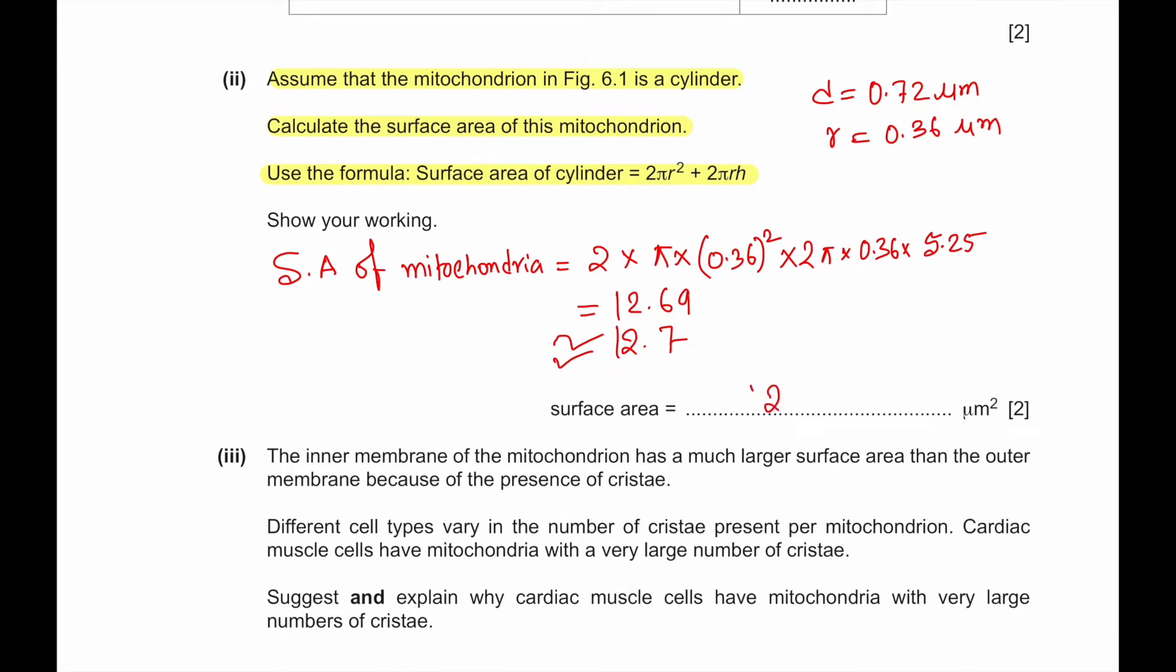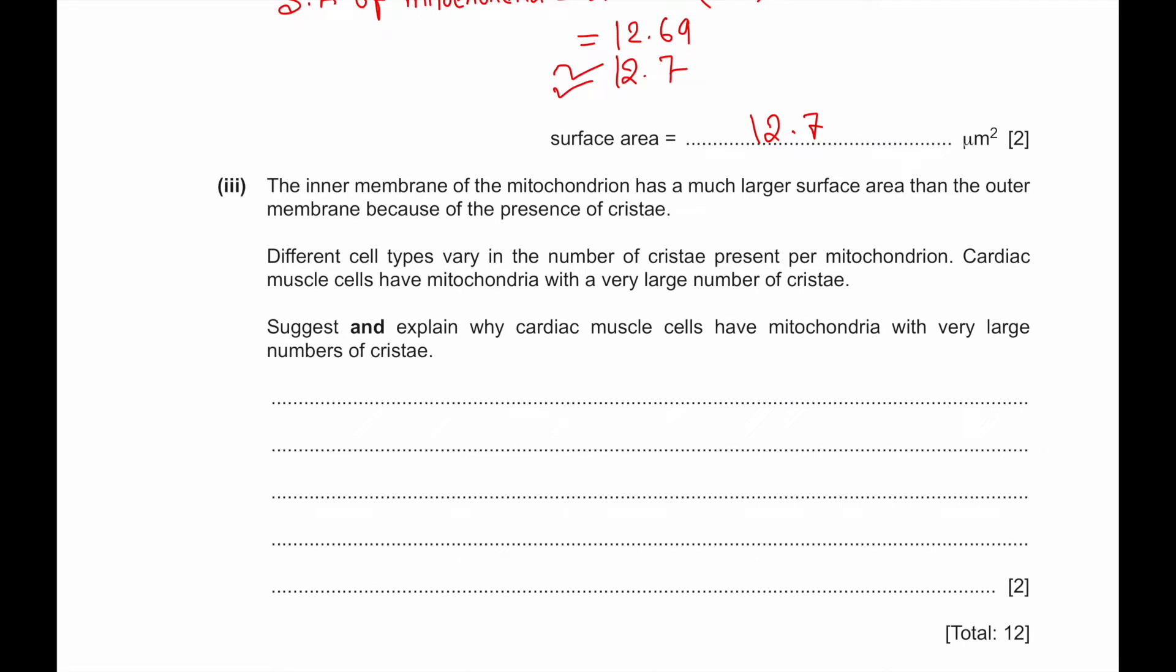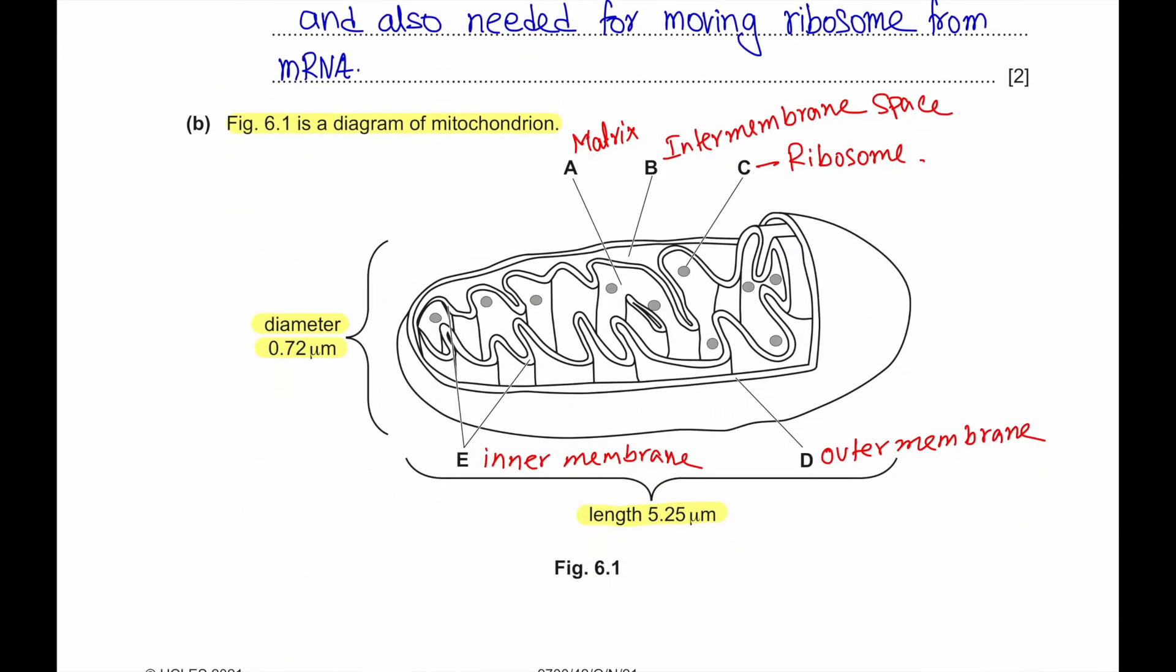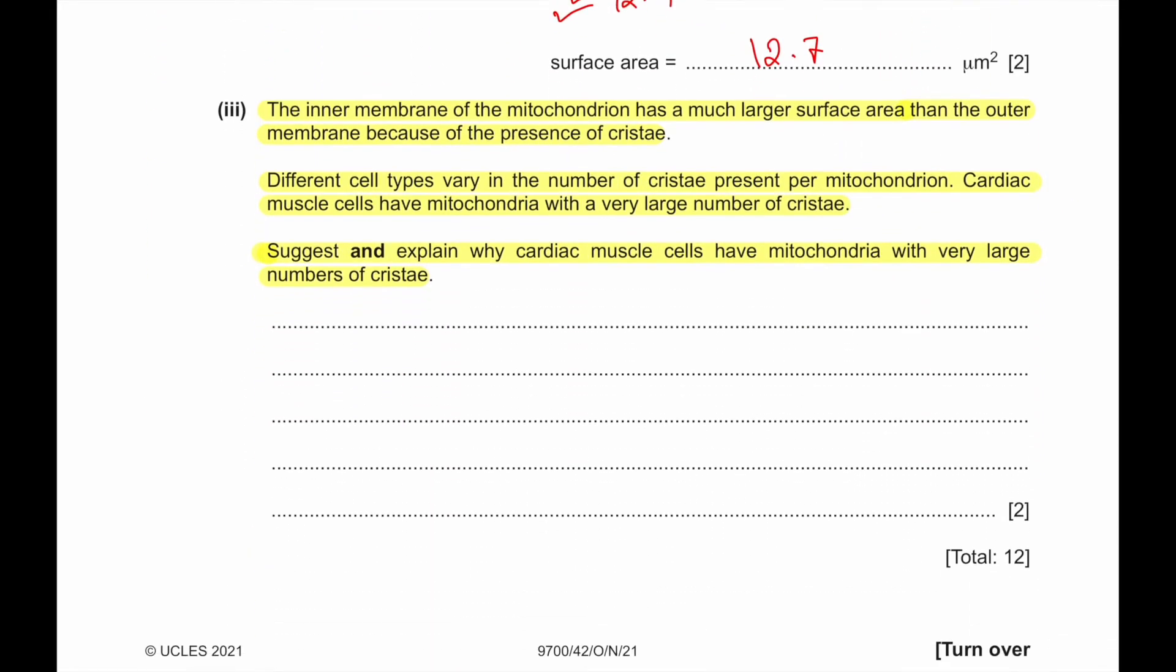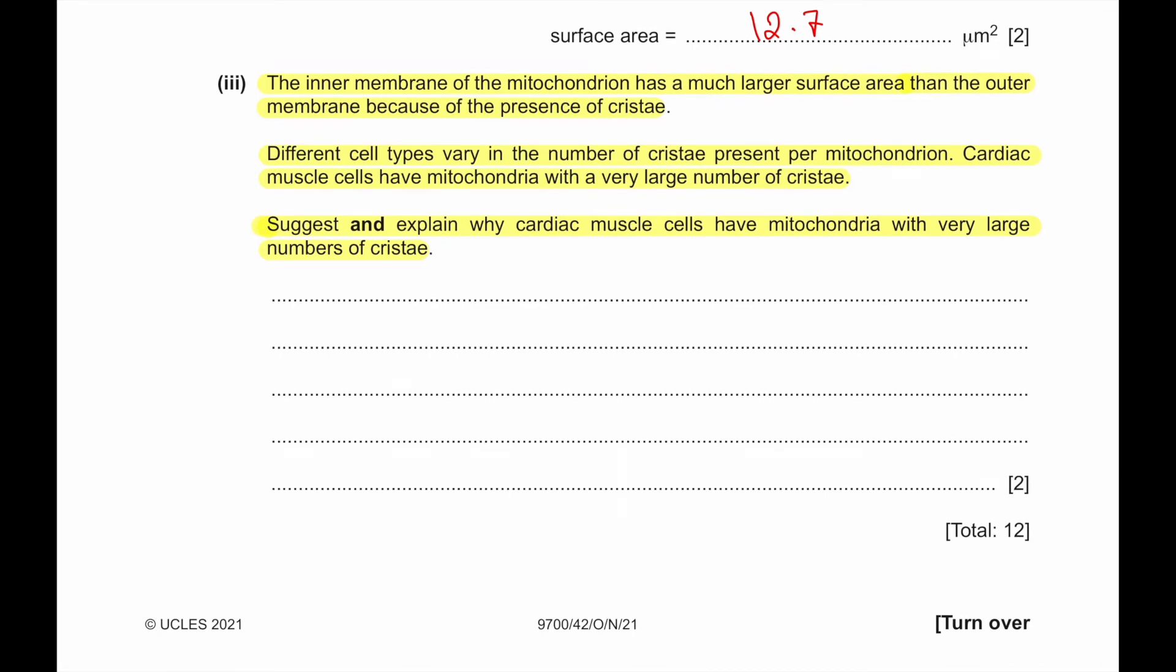Part iii: The inner membrane of the mitochondria has a much larger surface area than the outer membrane because of the presence of cristae. Different cell types vary in number of cristae present per mitochondrion. Cardiac muscle cells have mitochondria with a very large number of cristae. Suggest and explain why. More cristae means more electron transport chain present, because cristae house the electron transport chain and ATP synthase. More cristae result in more oxidative phosphorylation. Cardiac muscle cells must undergo continuous contraction, and muscle contraction requires energy.